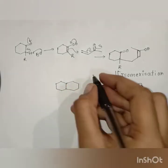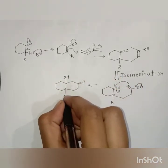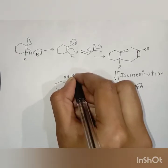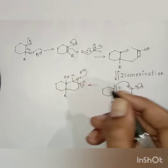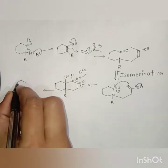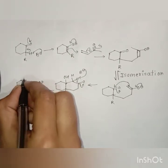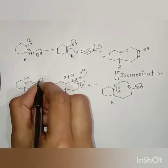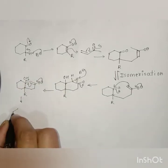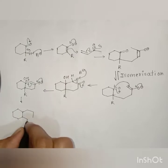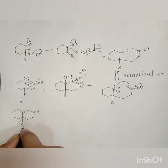We get the beta-hydroxy carbonyl compound. Again in basic conditions, the base will remove this proton on the carbon that can conjugate with the carbonyl group, and we get the enolate. Now through the E1cb mechanism, the hydroxyl leaves, and we get the most stable alpha-beta unsaturated carbonyl compound.